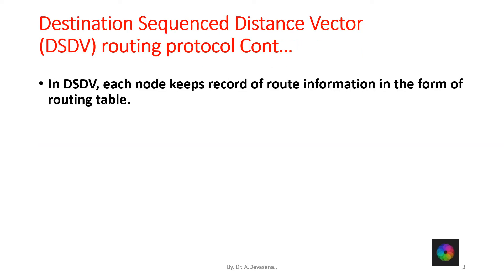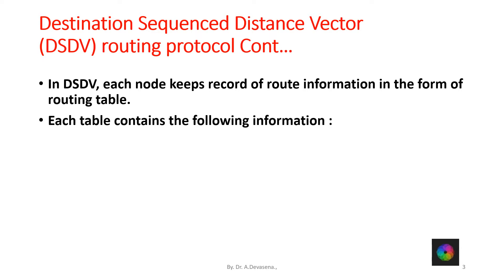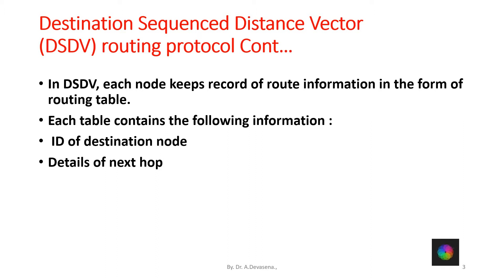In DSDV, each node keeps a record of route information in the form of a routing table. Each table contains the following information. First, the ID of the destination node has to be maintained by each node. Details of the next hop has to be maintained by each node — that is, the data has to be passed in a relay manner. The metric field records at what distance the node has to transfer the information from one node to another, and each node has to maintain this.